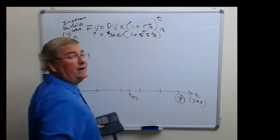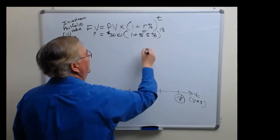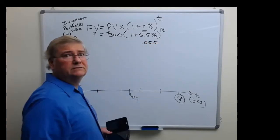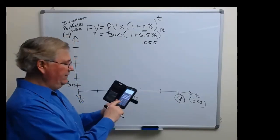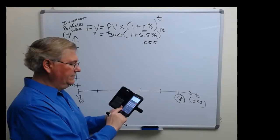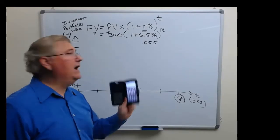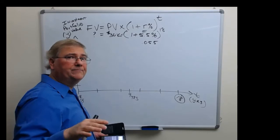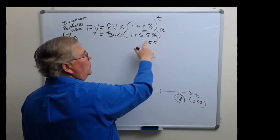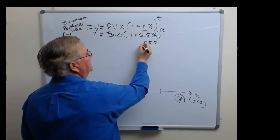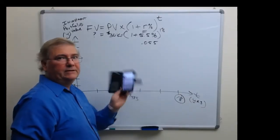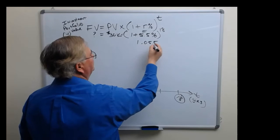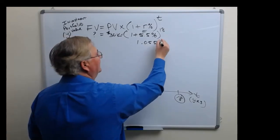All right, so what is 1 plus 5.5 percent? Well, 5.5 percent is the same thing as 0.055. To double check that, just take 5.5 and divide by 100 and you get 0.055, because remember that anything in front of our percentage sign means divide me by 100. So 5.5 divided by 100 is equal to 0.055. That plus 1 is 1.055. Now let's raise that to the 18th power.